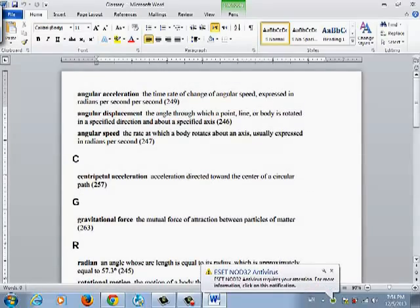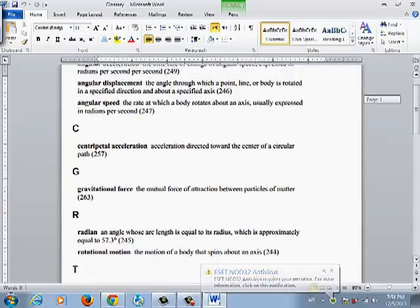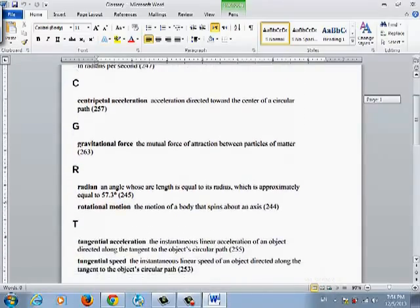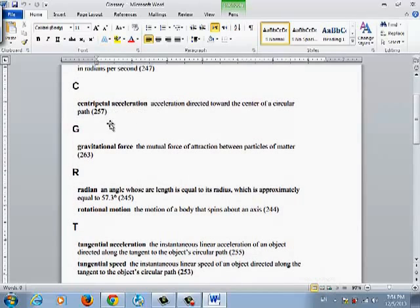This is a summary for the definitions that you need to know. We are going to start with the centripetal acceleration, a very important definition. It is the acceleration directed towards the center of the circular path. Sometimes we can ask you why we have a centripetal acceleration, or what is the main reason of the existence of the centripetal acceleration. The answer should be, it is due to the continuous change of the direction of the tangential velocity.